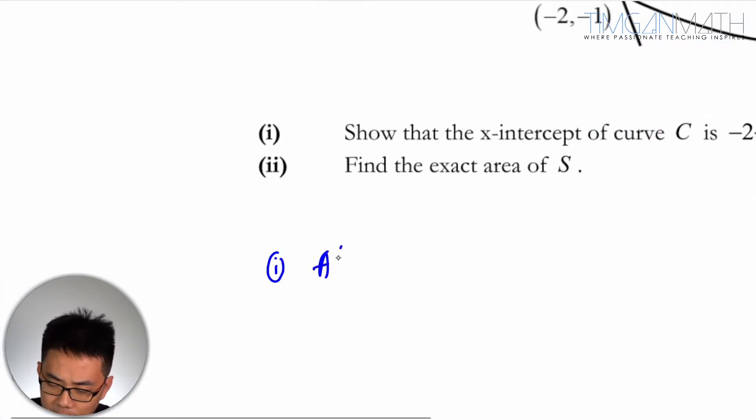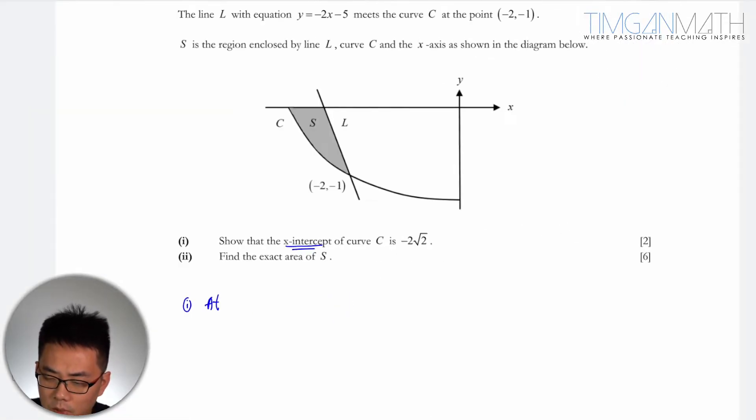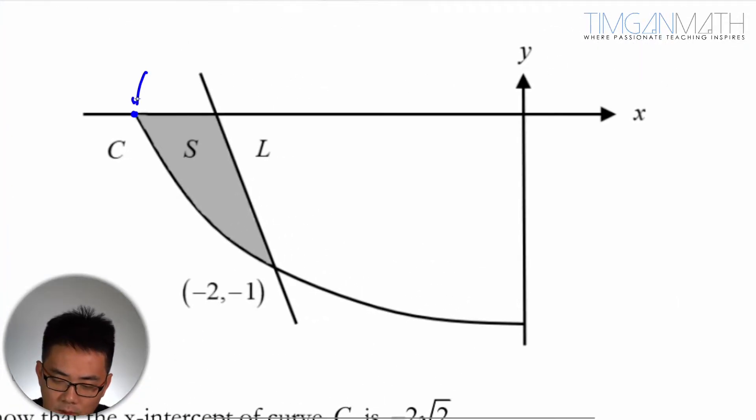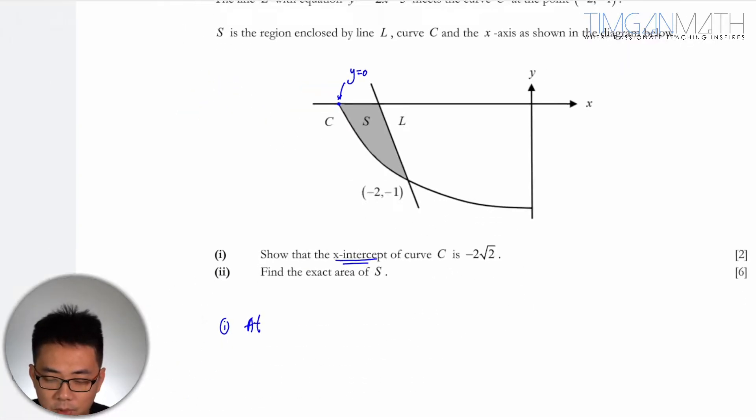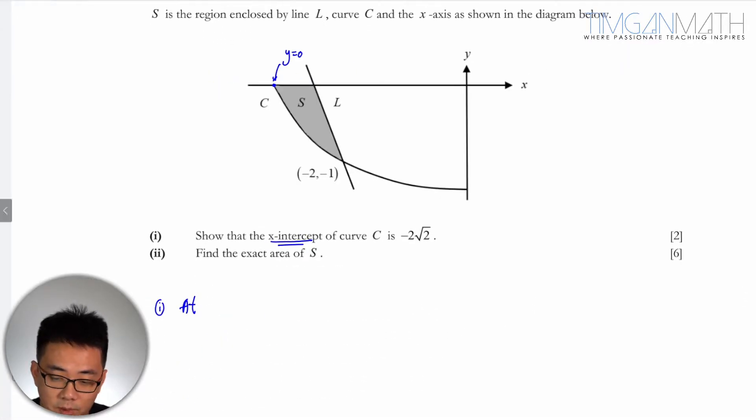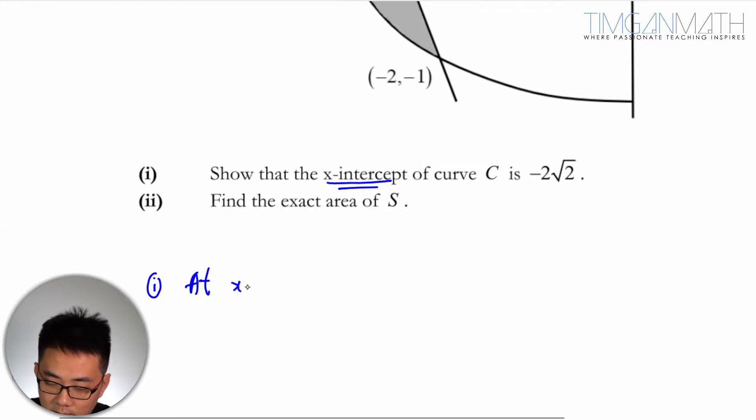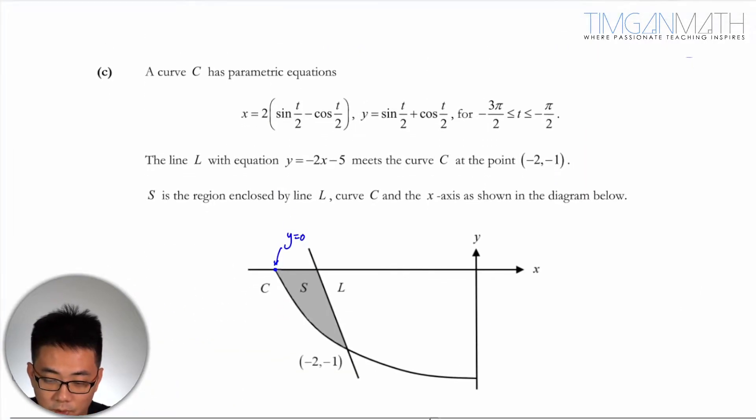At the x-intercept, you know very well that y equals 0. Now when it comes to parametric equations, the parameter is important. So at the x-intercept, what we need to do is set y equals 0, and I need to find what is my parameter which corresponds to y equals 0.